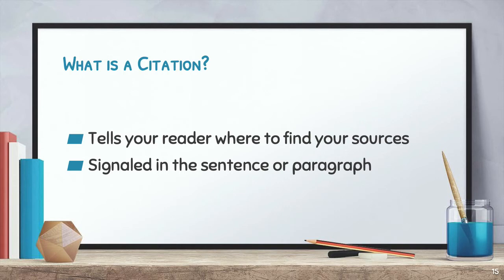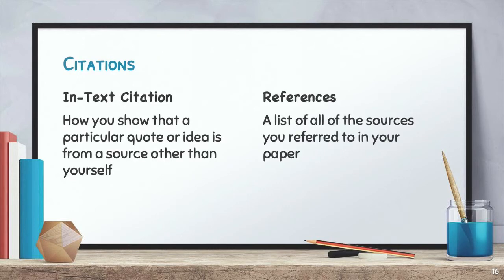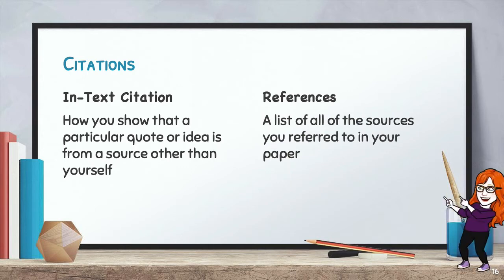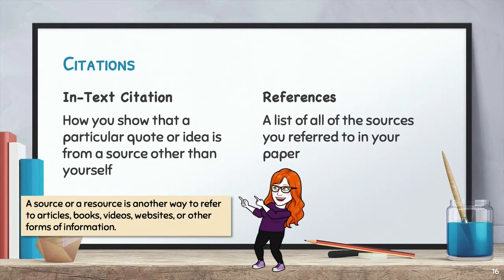In APA style, you use a combination of in-text citations and a list of references at the end of the paper to tell readers where to find your sources. An in-text citation is usually some information in parentheses at the end of the sentence or paragraph that will tell your reader where to find the full information of your source in the references list. A source or resource is another way to refer to articles, books, videos, websites, or other forms of information.